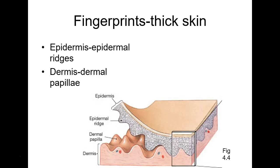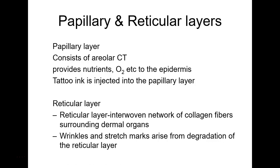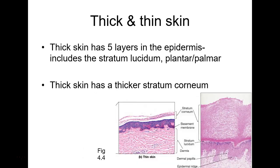The closer you are to your blood supply, the better off the cells are — nice and plump and fresh. As more cells are made they get pushed upward, so the further you are from the surface, the older those cells are. They die off and become the cornified layer because they're too far from nutrients and blood supply. If I ask what two layers compose the dermis, you say papillary and reticular.